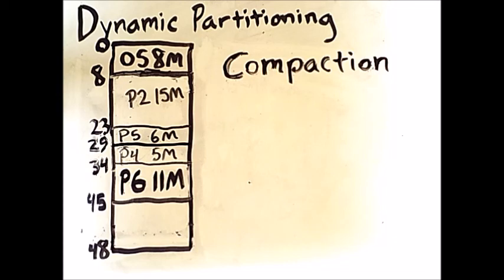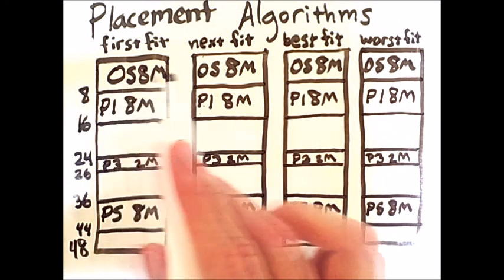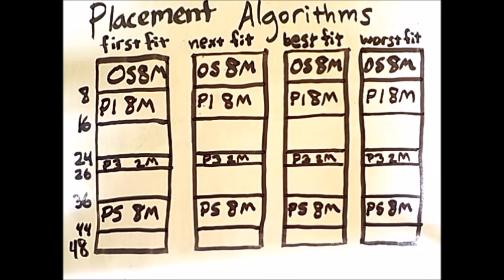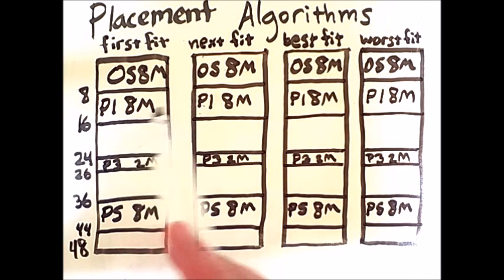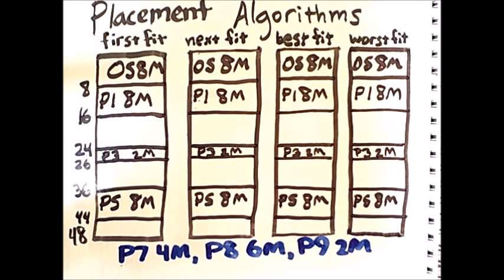So, we will now talk about various different placement algorithms that can be used with dynamic partitioning. The four different placement algorithms I'll be discussing are first fit, next fit, best fit, and worst fit. We see here four identical memory layouts that have some amount of external fragmentation. We will now see how each of these different placement algorithms handles a sequence of memory requests differently. Here is the sequence of memory requests.